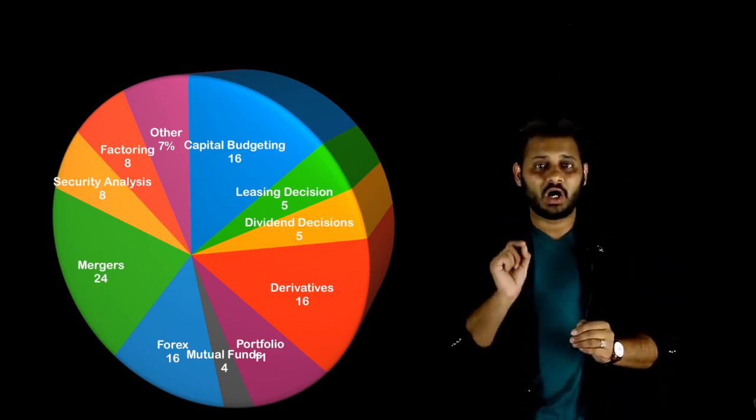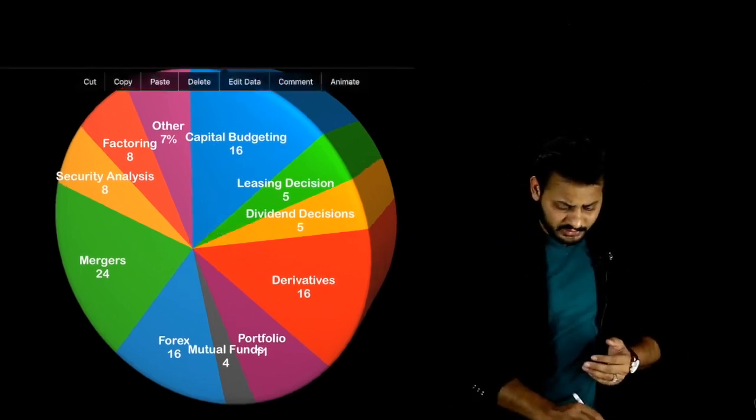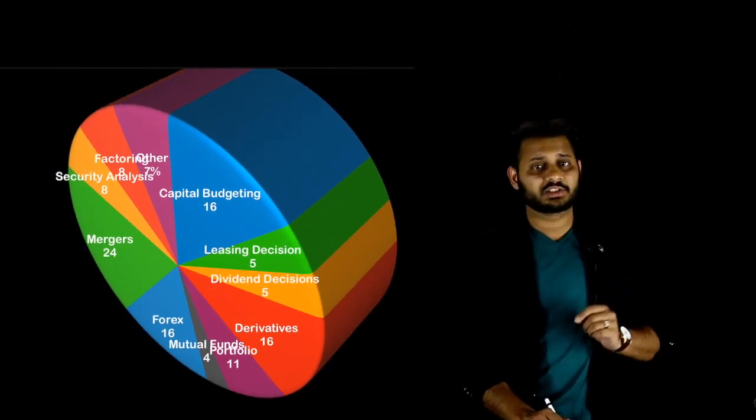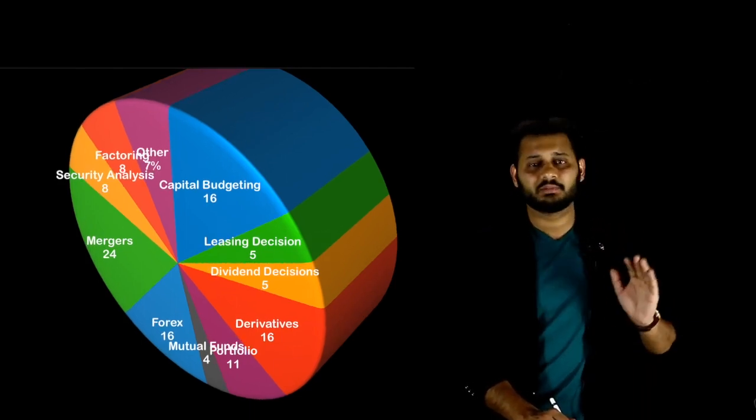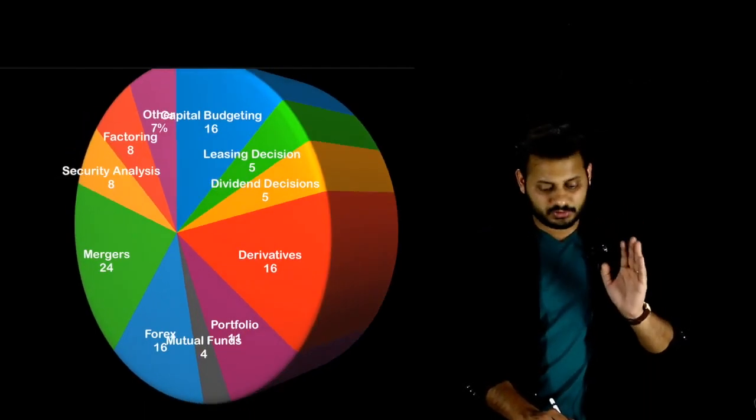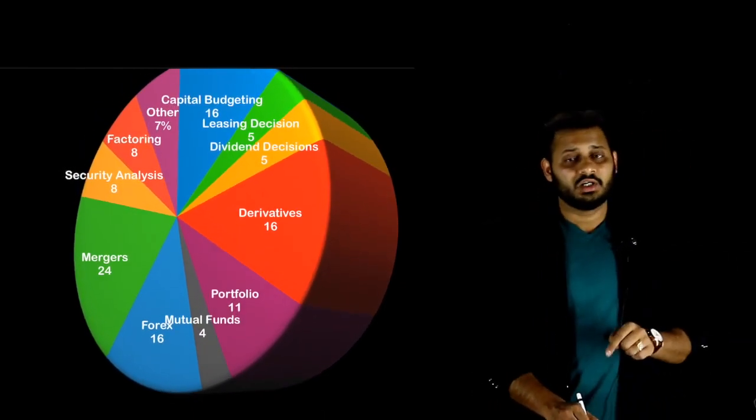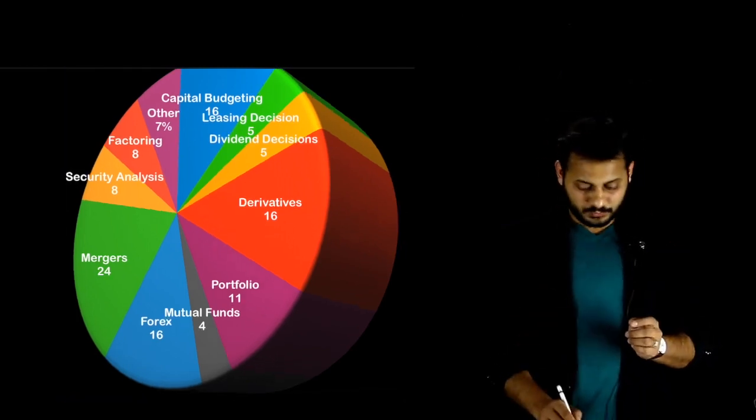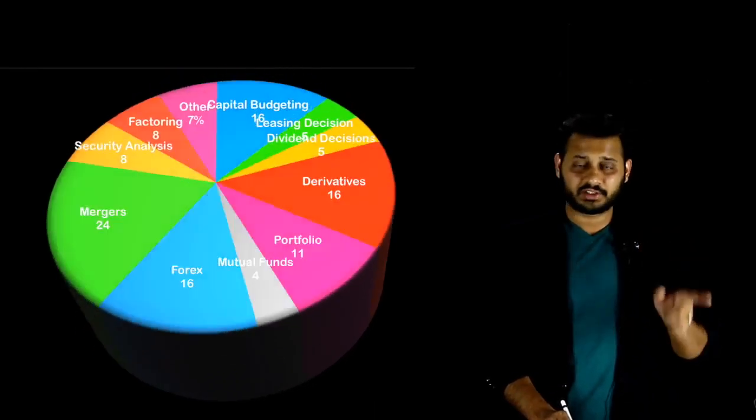Now let's discuss about how much marks actually has been asked from each chapter. You can see that from Capital Budgeting, 16 marks of the paper was asked. But if we talk about the 3rd November paper, Capital Budgeting was not given that much importance. But rest of the three chapters that I am going to discuss now were important in 3rd November paper also. Derivatives, 16 marks. We had importance for the same chapter in 3rd November.